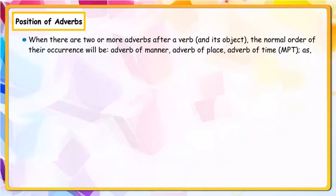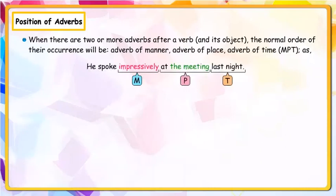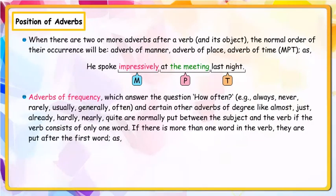When there are two or more adverbs after a verb and its object, the normal order of their occurrence will be: adverb of manner, adverb of place, adverb of time. Example: 'He spoke impressively at the meeting last night.' — Impressively (adverb of manner), at the meeting (adverb of place), last night (adverb of time).